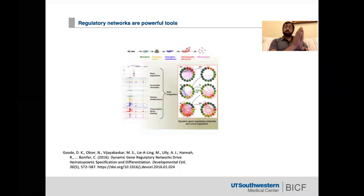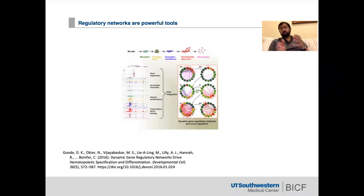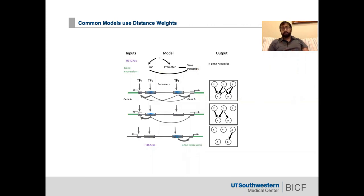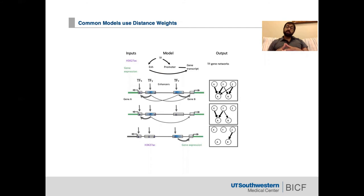We all know that regulatory networks are powerful tools, and many people use different genomic data to generate these regulatory networks to find differences in developmental time points or between normal tissue and a disease state, to really find driver genes and novel regulators. The common model that many people use is a very linear model — they'll find enhancers, look at transcription factor motifs, and then develop the network by using a distance matrix on a linear basis. So the closer an enhancer is to a gene promoter, the transcription factors driving that promoter will have a higher weight.